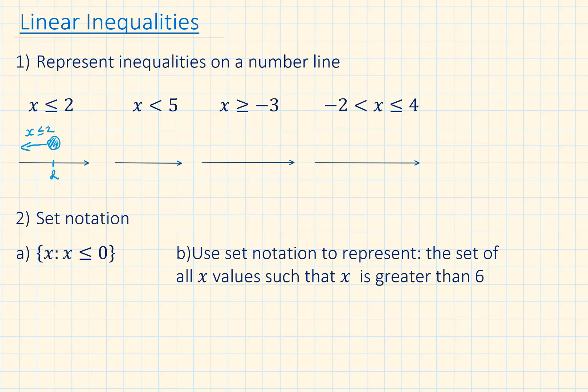x is less than 5. We have a number line — label 5. Now the 5 is not included, so we have an empty circle. Everything less than 5 pointing towards negative infinity. And label the top.